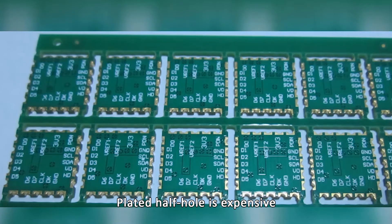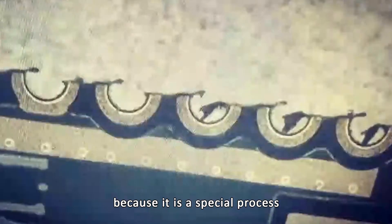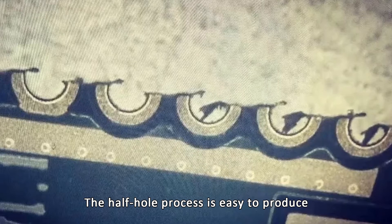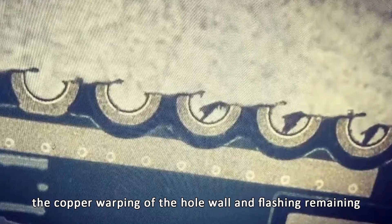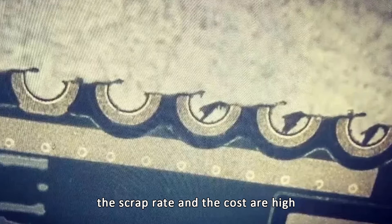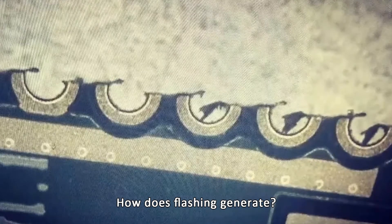Plated half holes are expensive because it's a special process. The half hole process easily produces copper warping of the hole wall and flashing. Due to high scrap rate and cost, how does flashing generate?